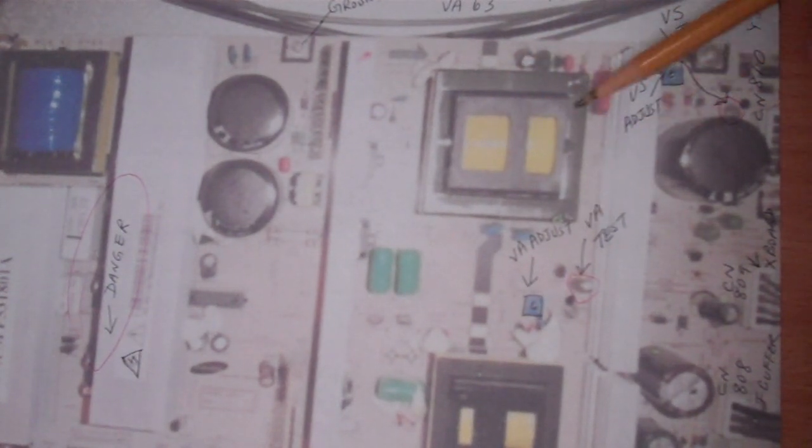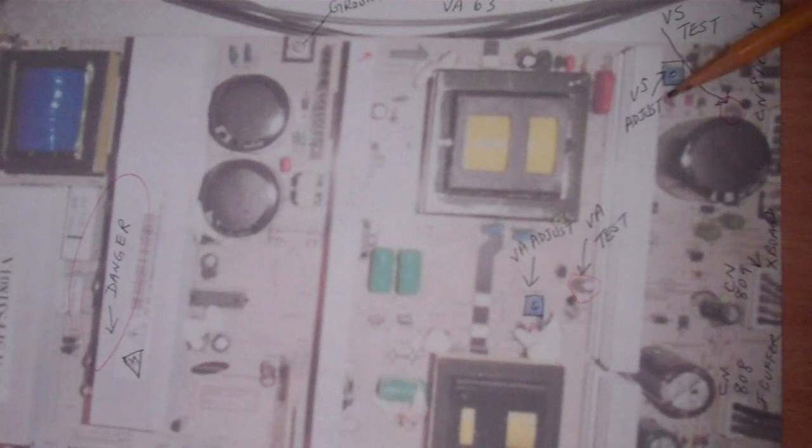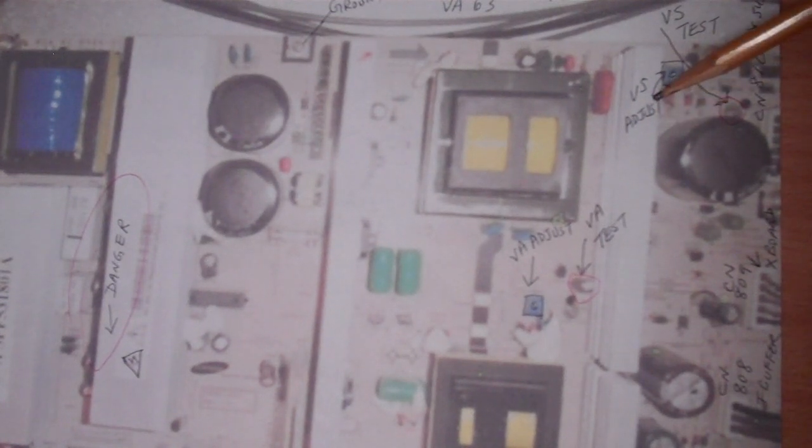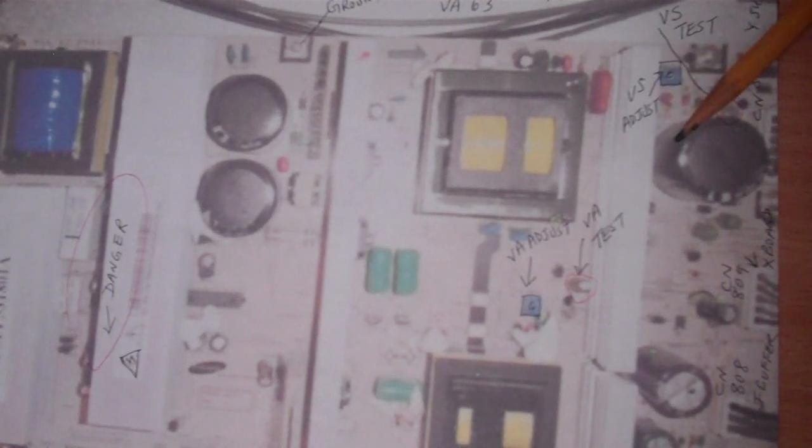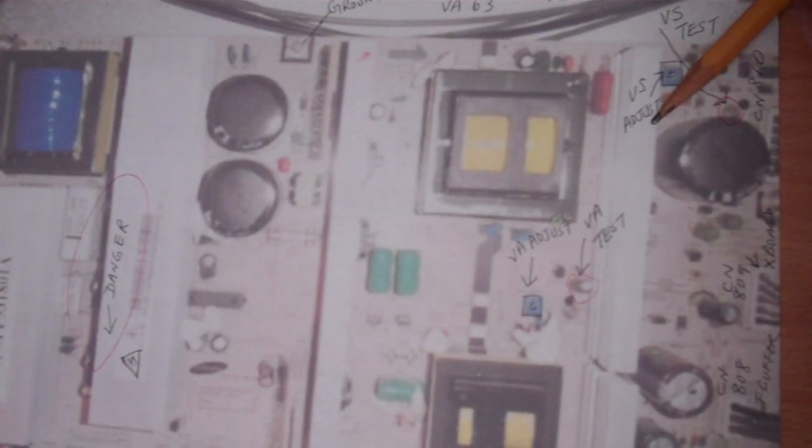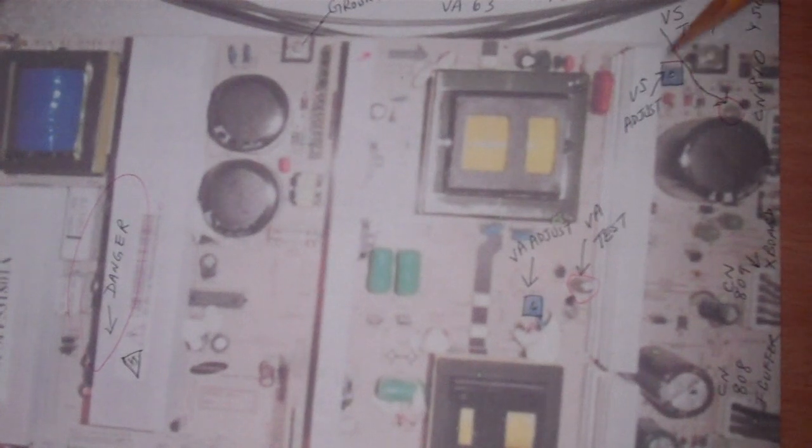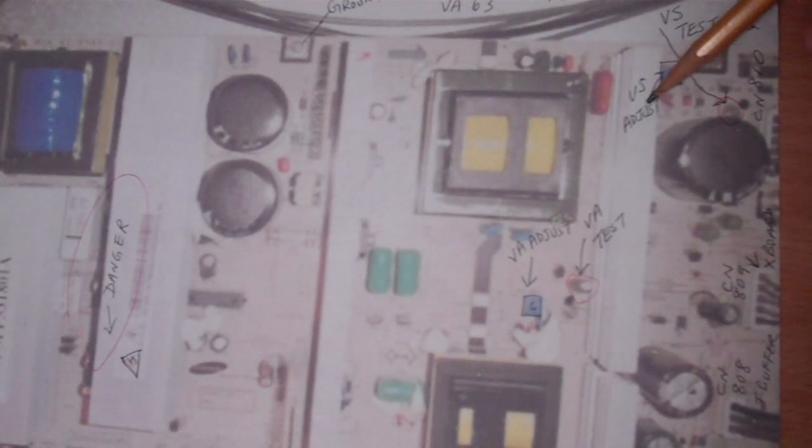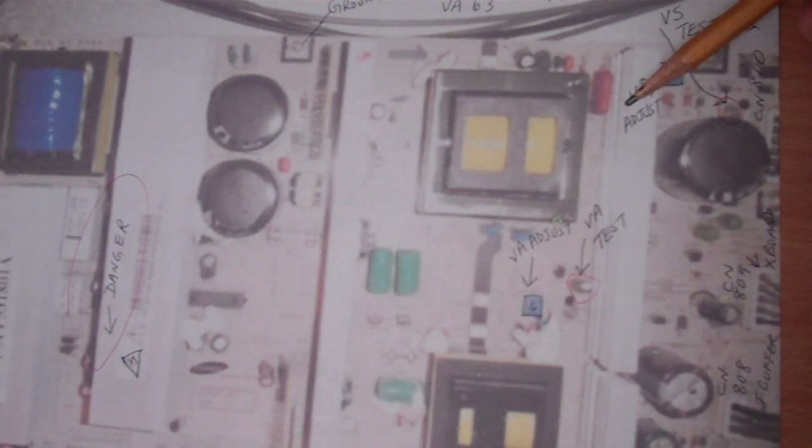In that case, with the television on - again you have to be extra careful - make the adjustment. I forgot which one I adjusted, probably the VS. Adjust it probably down and have someone at the front of your television see if the noise disappears. If it disappears, then you probably have the right voltage. You can also test the voltage as well, but you can adjust it down and then you would have a good picture.